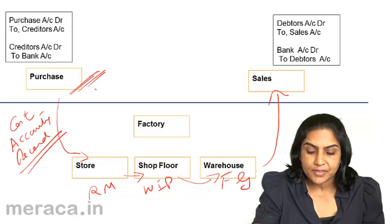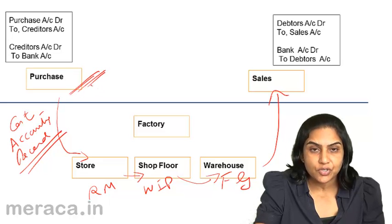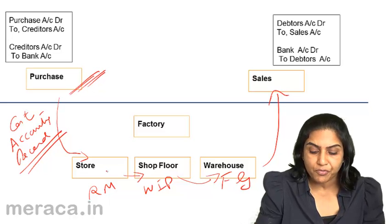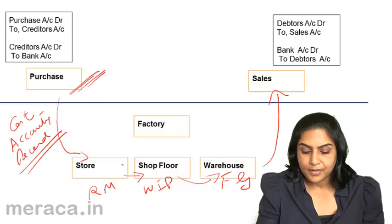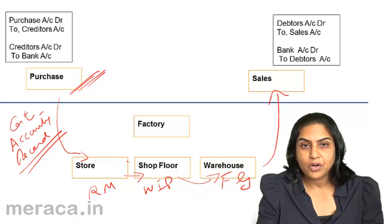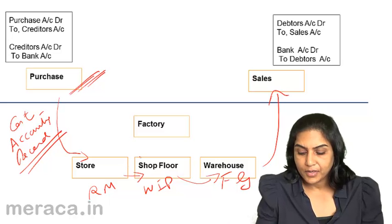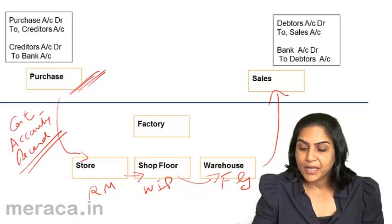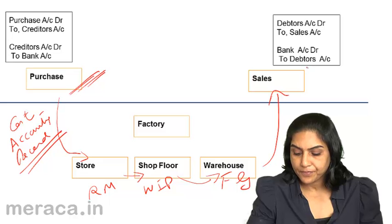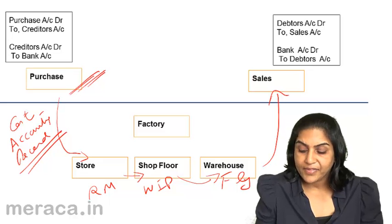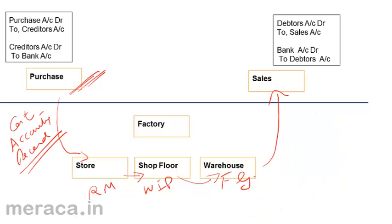With the purchase of materials, the function of the financial accountant is essentially over. When a large amount of materials come into the store, some degree of control has to be exercised — that is the function of the cost accounting records. Similarly, when goods are sold, entries are passed in the financial books, and the entries affecting the cost of goods sold are passed in the costing books.